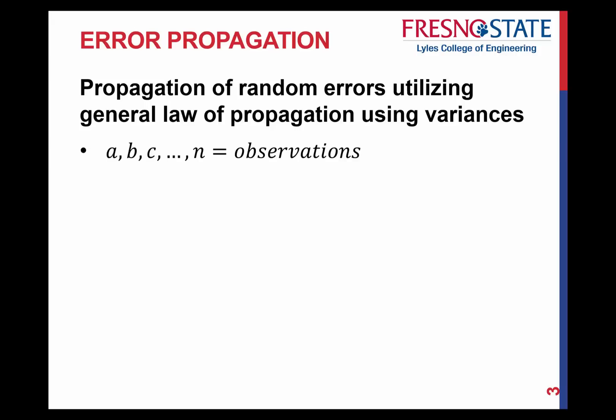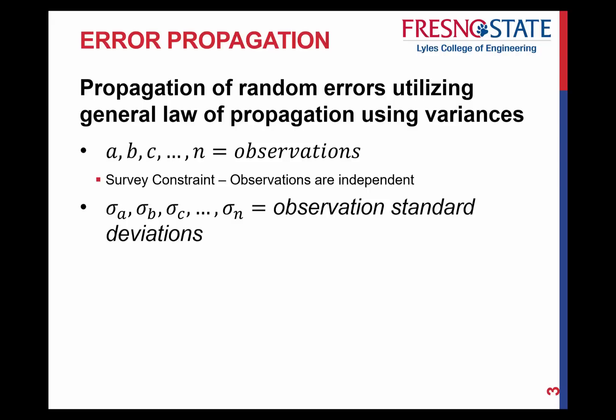Just to help keep you understanding the formula we're going to use here: let's say that we had A, B, C, all the way up to N as our observations. The only constraint when doing error propagation is that every observation is independent of one another, meaning they're not relying upon one another. It doesn't depend on what happened at A first to figure out what happens at B. Everything is strictly independent. The notations used are sigma of A, sigma of B, sigma of C, up to sigma of N — standard deviations.